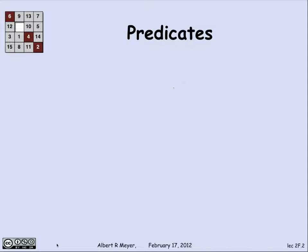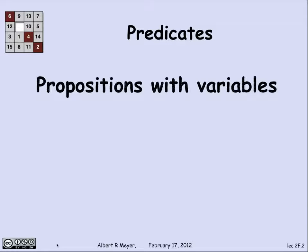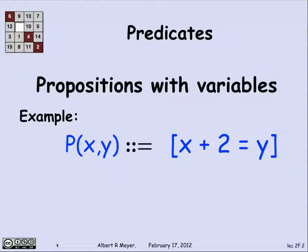So what's a predicate? Basically, a predicate is a proposition except it's got variables in it. Here's an example: P of x, y is the predicate that depends on x and y, and let's say it's defined to be x plus 2 equals y.